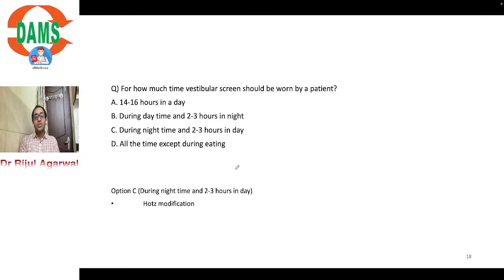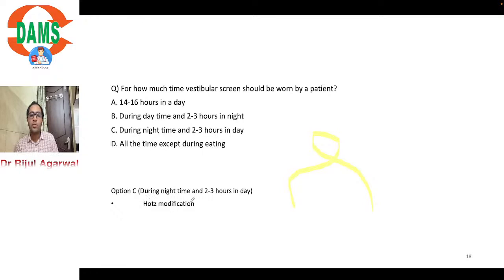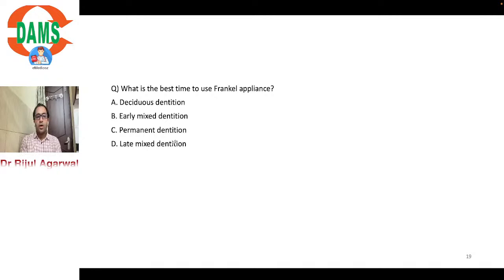A related question: what is the Hotz modification of a vestibular screen? It is simply a wire loop made of 21-gauge wire embedded with cold cure acrylic. The patient sucks on this loop while wearing the screen, helping to improve lip competency. The holes in the screen are gradually reduced over time to check and eliminate the mouth-breathing habit.